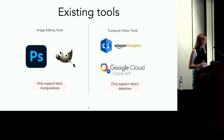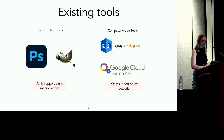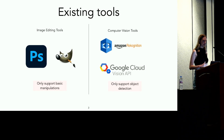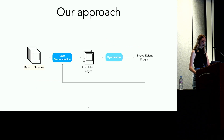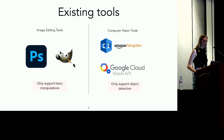If Alice wants to automate her task, she doesn't have a lot of good options. Some popular image editing software, like Photoshop and GIMP, have support for batch image editing, but they only allow users to make simple edits, like resizing or applying a filter to the entire image. These tools don't allow users to make edits that are dependent on the content of the image.